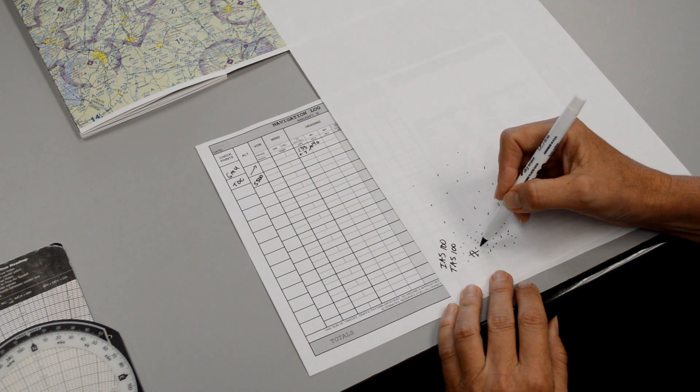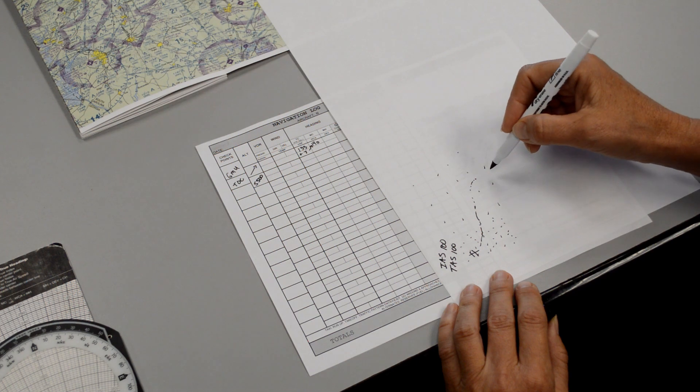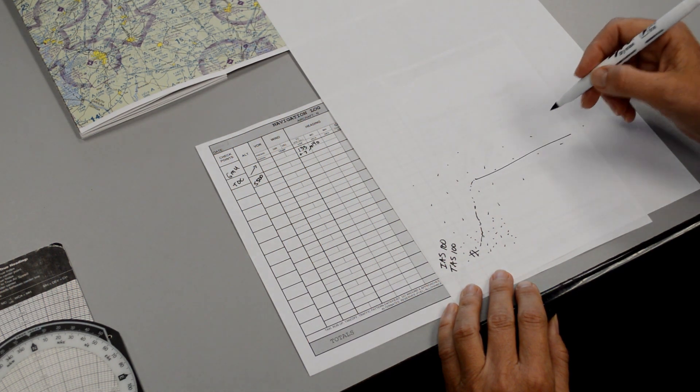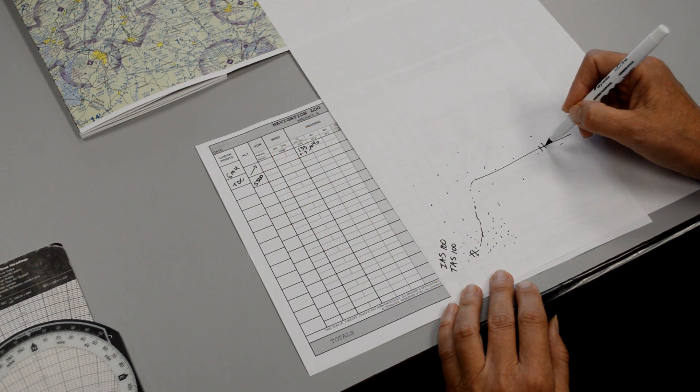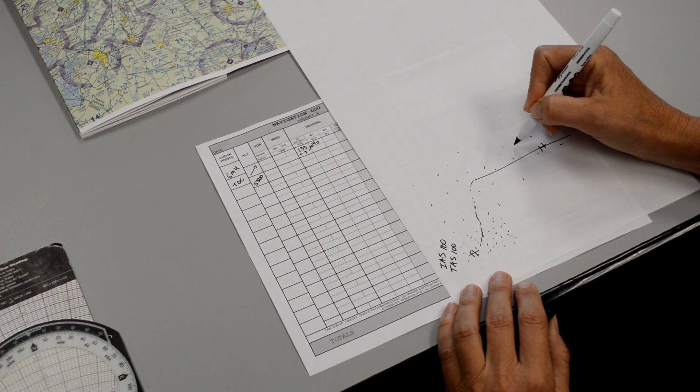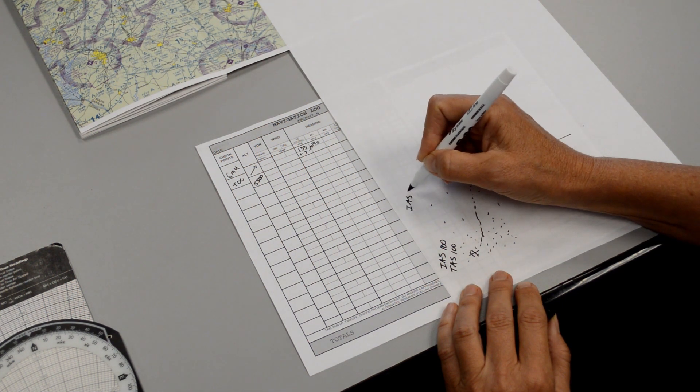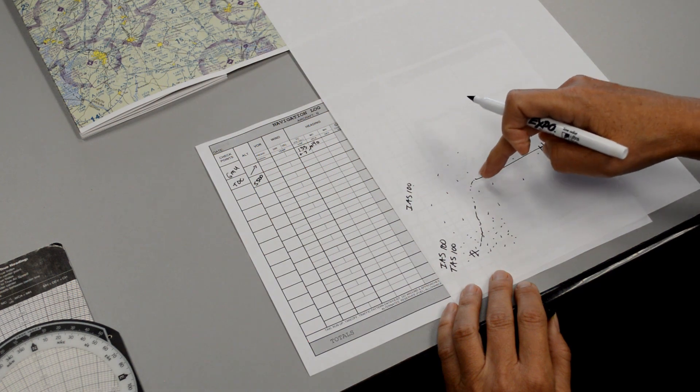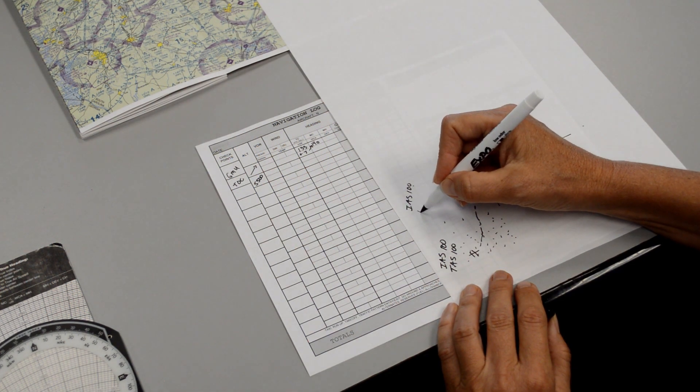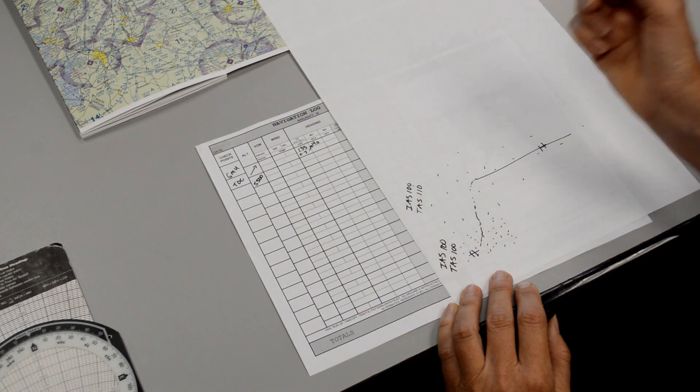Once we have our momentum up and we're climbing at a higher altitude, the airplane is physically moving faster through the air in order to still indicate 100 knots. So up here we may indicate 100 knots, but the true airspeed may end up being around 110, for example.